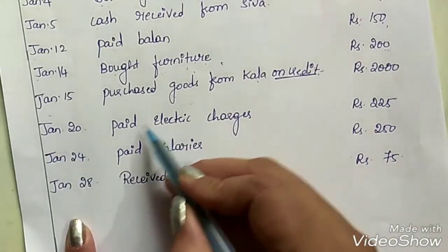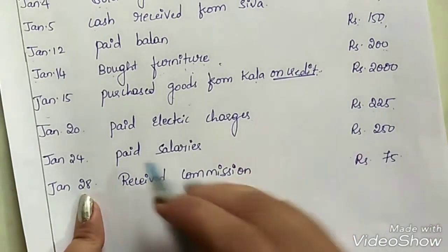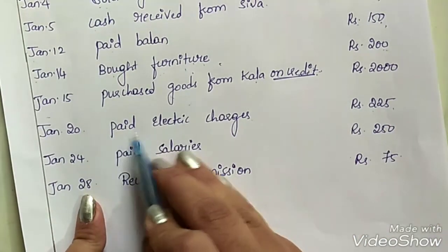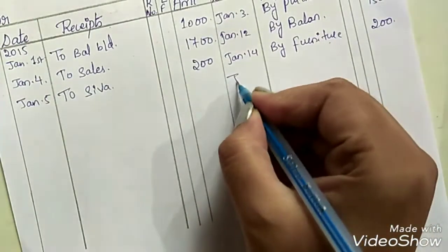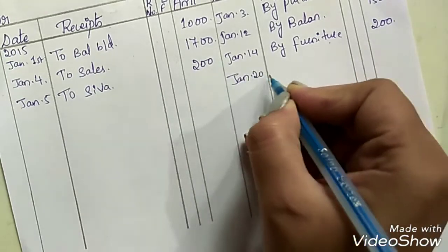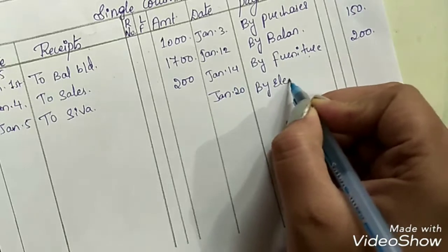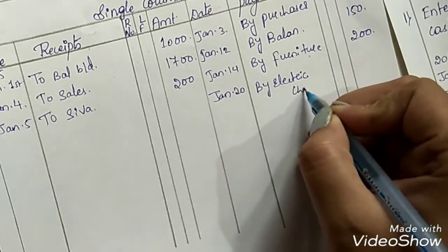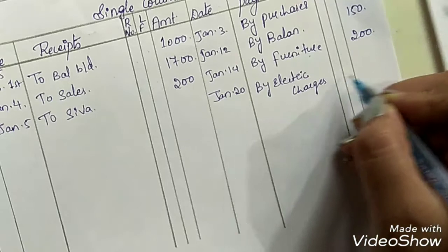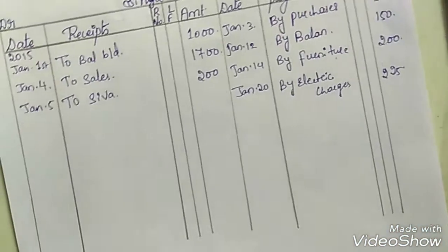On January 20th, paid electric charges Rs. 225. We are making a payment here, so take it on the payment side. Entry: January 20th, by electric charges, Rs. 225.